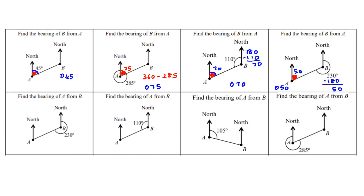That is one way. The other way: if the reflex angle is given, find the inside angle first — 360 minus 230 gives 130. Then, since the two north lines are parallel, subtract from 180: 180 minus 130 equals 50. So this is the second way to find the angle, giving the same bearing of 050.